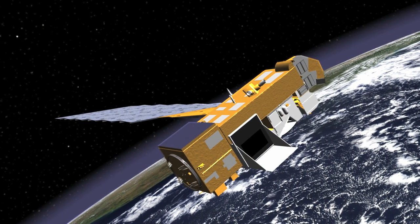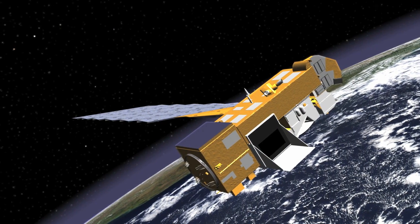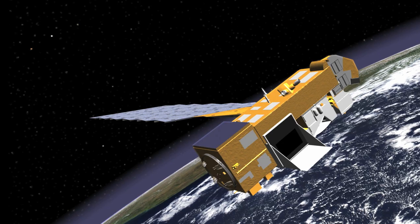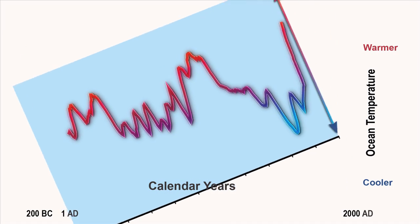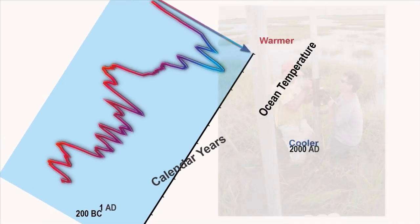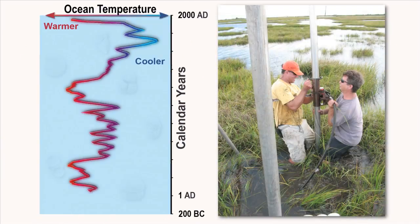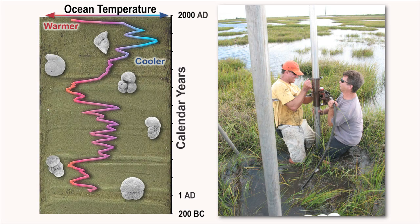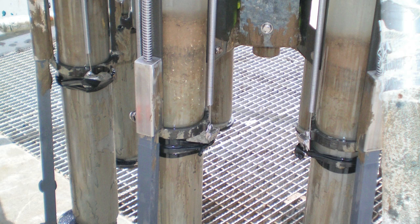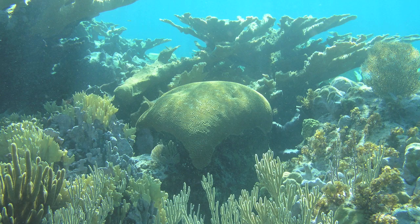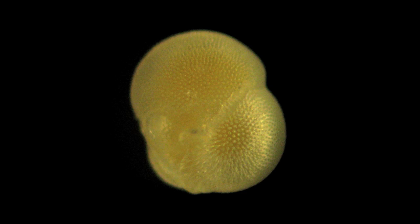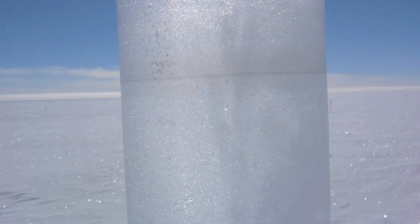Reliable instrumental records of climate change are available only for the last 150 years. To get at paleoclimate information, or past climate records stretching back thousands of years, scientists use Earth's geologic record. Trees, ice cores, corals, and shelled microorganisms are natural archives that store climate information.